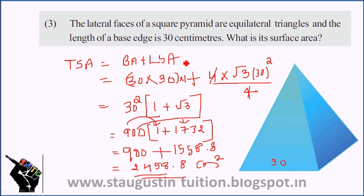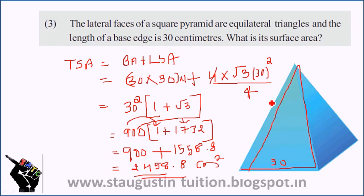The total surface area equals base area plus lateral surface area. Base area is 30² = 900. The total surface area equals 900 × (1 + √3), which equals approximately 2458.8 cm².